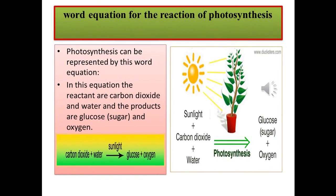Now the word equation of the photosynthesis process. Photosynthesis can be represented by this word equation: the reactants are carbon dioxide and water, and the products are glucose, sugar, and oxygen.